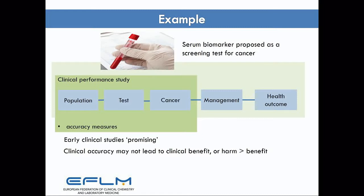I'd need information that there was an effective management. And even if there was an effective management, unless the test is perfectly accurate, misclassification may cause harm. So I want to know that those harms don't outweigh the benefits. Short of doing a randomised controlled trial to demonstrate the impact of that test on health outcomes, the question is: what level of clinical performance would be sufficiently promising to say that we may achieve the intended benefits?